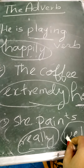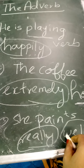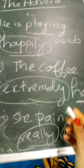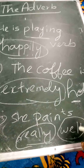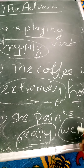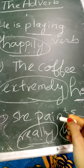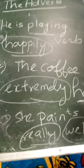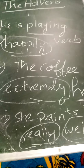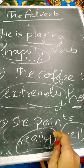So, adverb kya hua? Ki aisa word, jo ki verb ho, adjective ho, ya another adverb ho — us ki visheshta batata hai, us ki quality batata hai. Clear children? So, that is adverb.